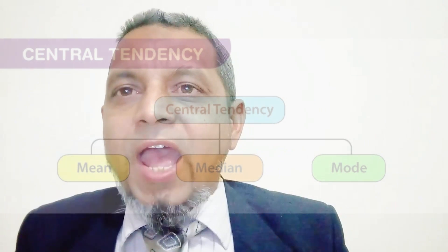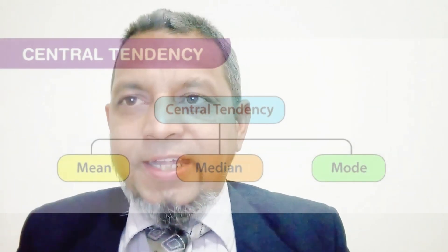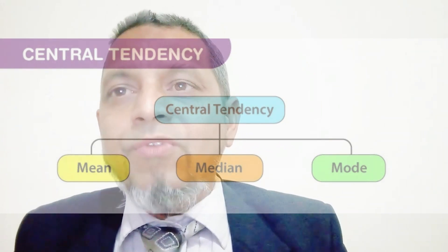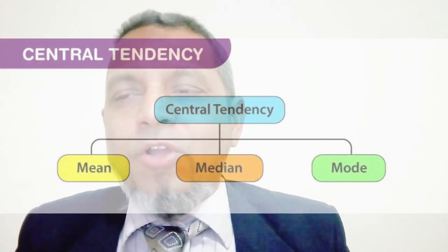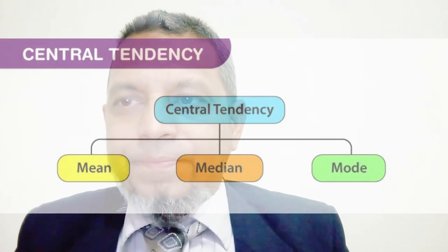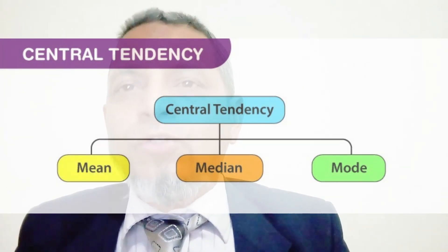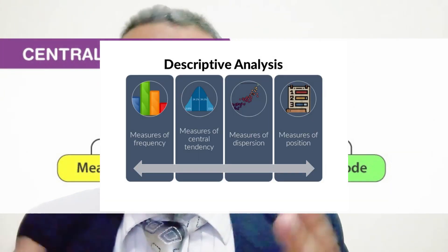Number one: measures of central tendency. Measures of central tendency focus on the average or middle values of a dataset, whereas measures of variability focus on the dispersion of the data. Measures of central tendency are calculated through mean, median, and mode.